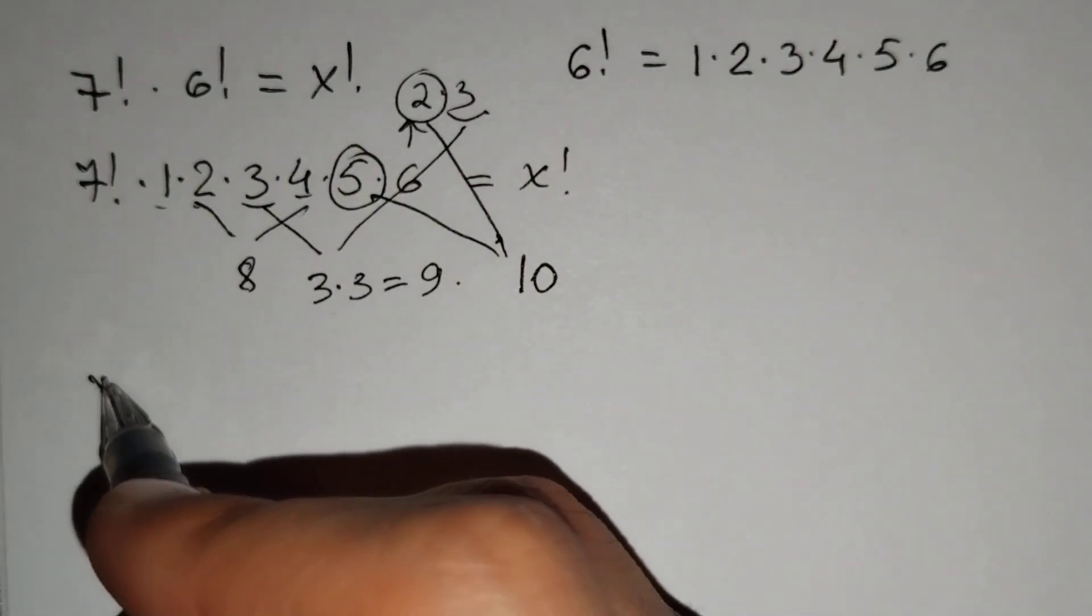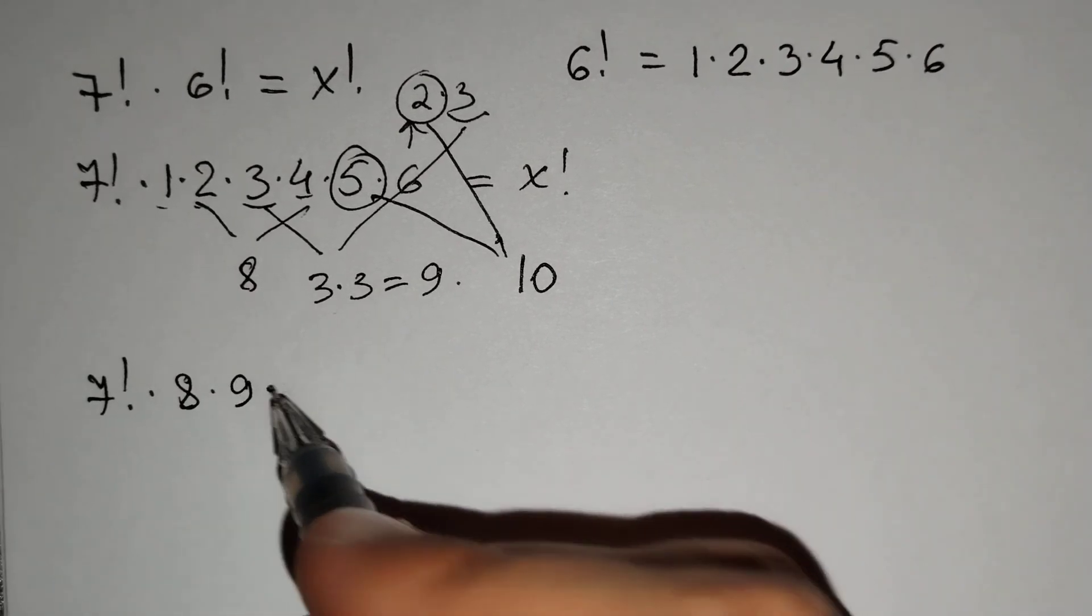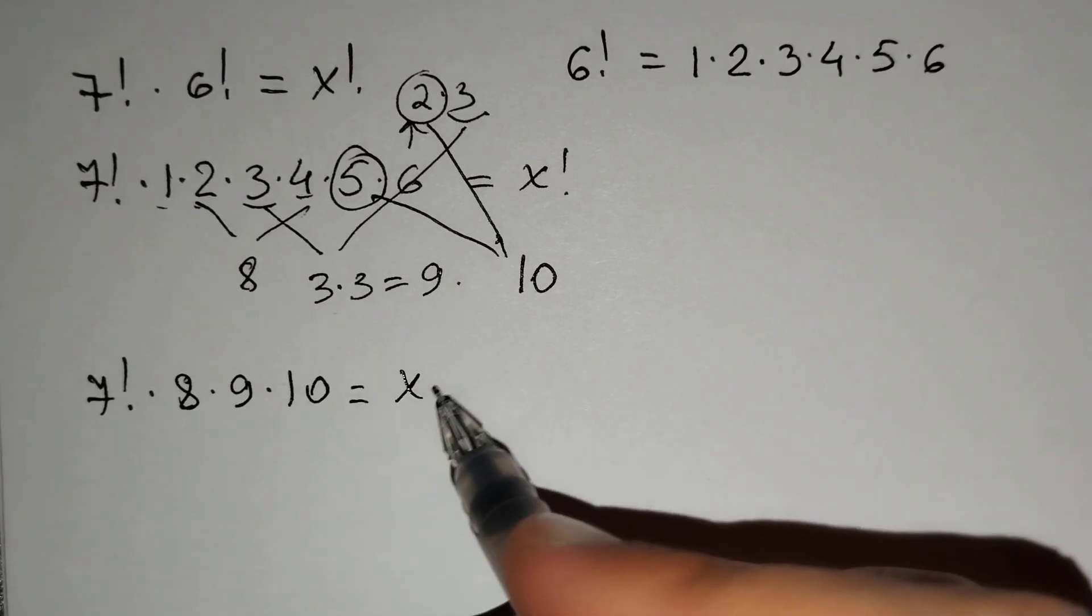And here, 7 factorial times 8 times 9 times 10 equals x factorial.